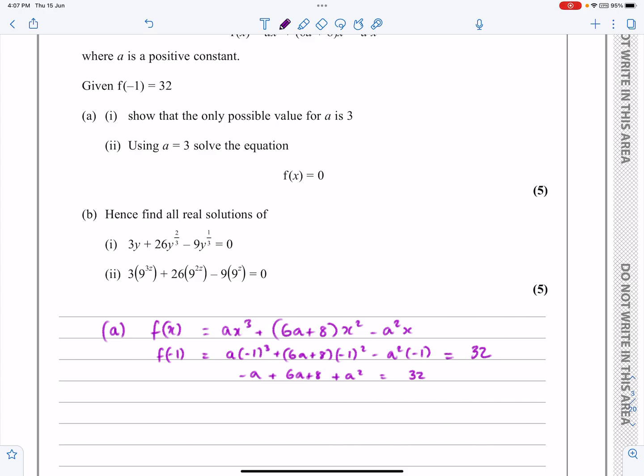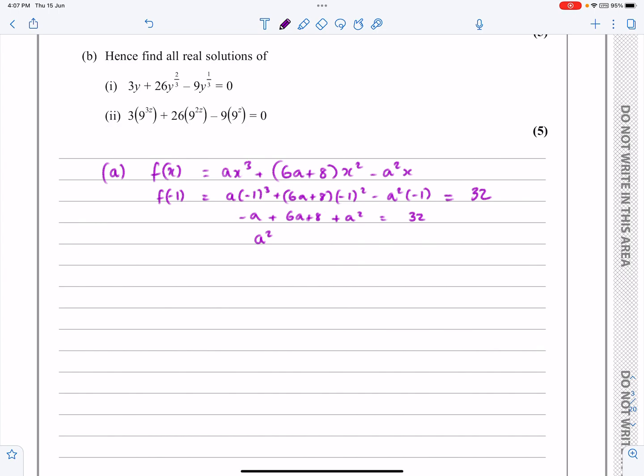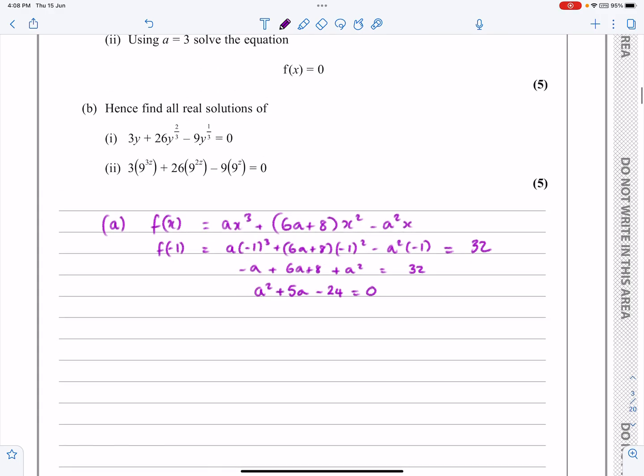And so let's rearrange all that to look like a normal quadratic. We're going to have a², the a and the 6a, the minus a and the 6a, we'll sort that out to be that. And we've got plus 8 minus 32, so that's minus 24 equals 0. I'm not going to do quadratic factorising for you. This is going to give me a equals 3 or a equals minus 8.